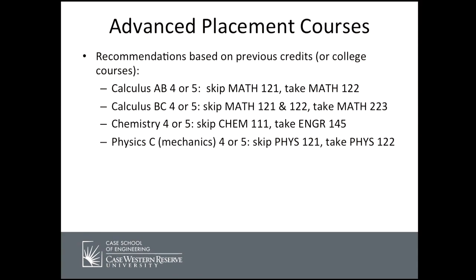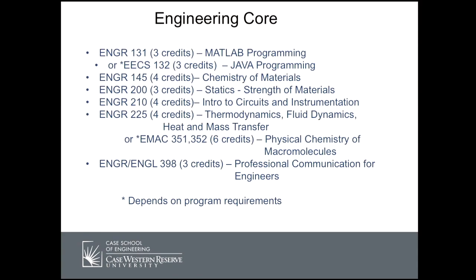You'll see in the slides the details on which courses you can skip. The rest of the engineering core includes courses in computer programming, chemistry of materials, statics and mechanics of materials, circuits and electrical engineering, thermodynamics, and an engineering-level writing course taken towards the end of your undergraduate career. You'd like to take these as early as possible, and as we talk about the individual major programs, each program has some preferences as to which ones you take first.